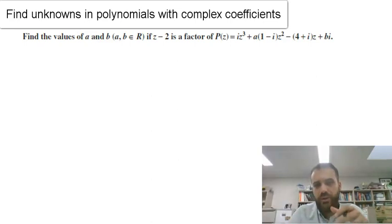So this time we're finding unknown coefficients. This time it's a complex coefficient, so you can see i at the front here, and there's some i's in our coefficients all the way along. Polynomials. Alright, so let's take a look.